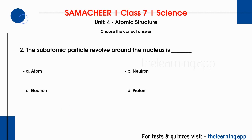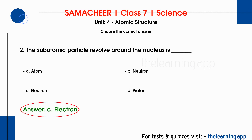Second question: the subatomic particle that revolves around the nucleus is dash. Options are: A) atom, B) neutron, C) electron, D) proton. Correct answer is option C, electron.